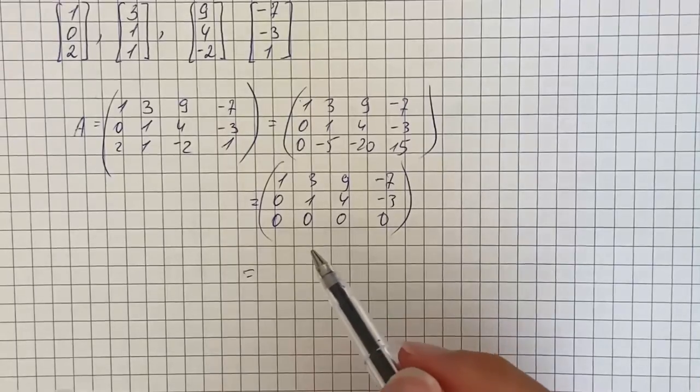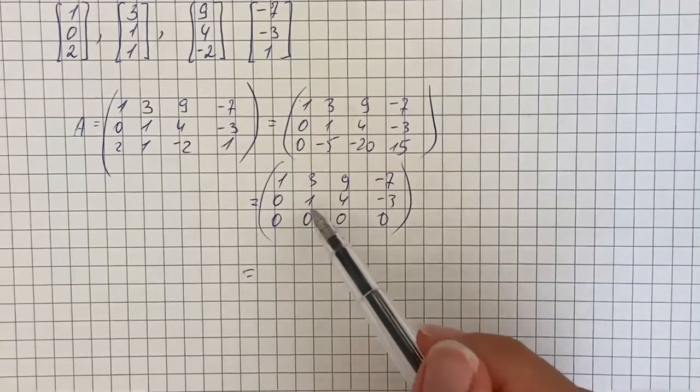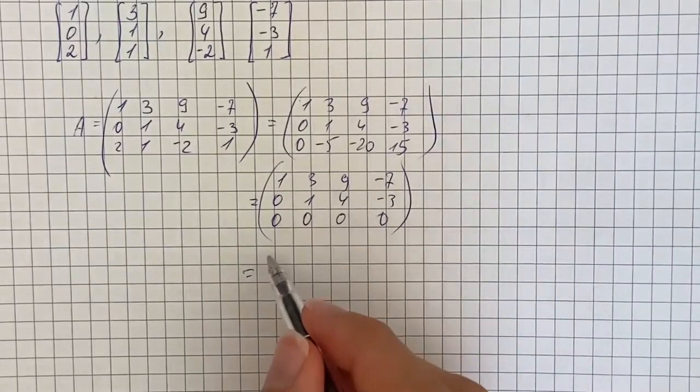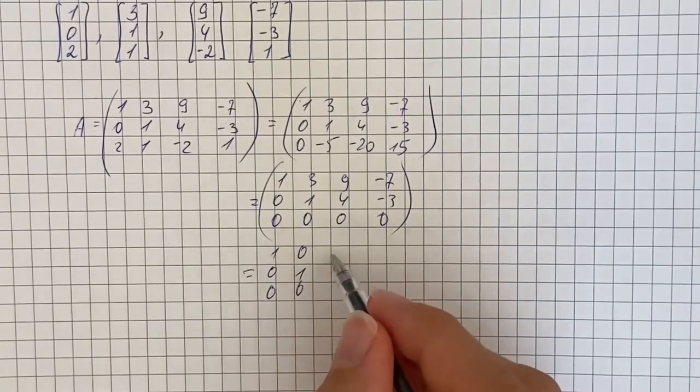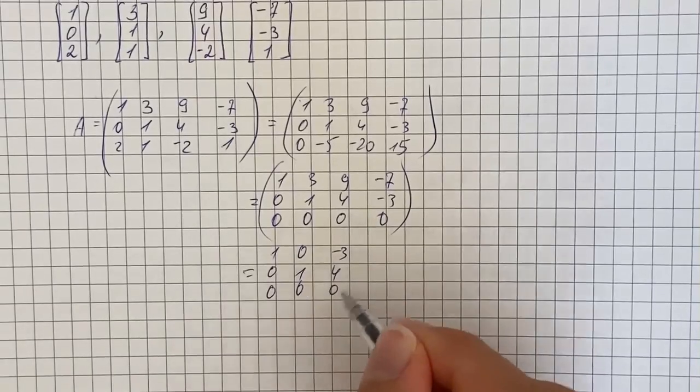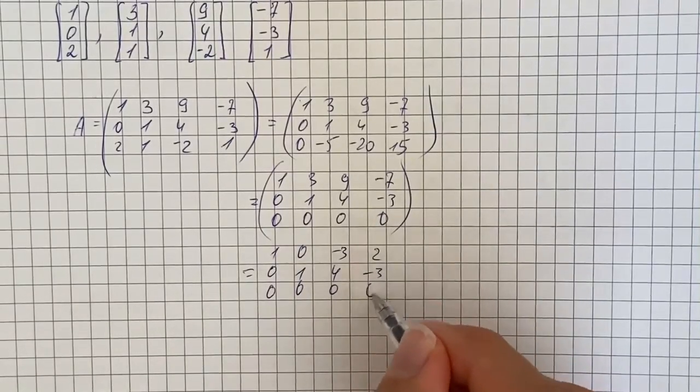And now we're going to subtract 3 times the second row from the first to get 1, 0, 0, 0, 1, 0, negative 3, 4, 0, 2, negative 3, 0.